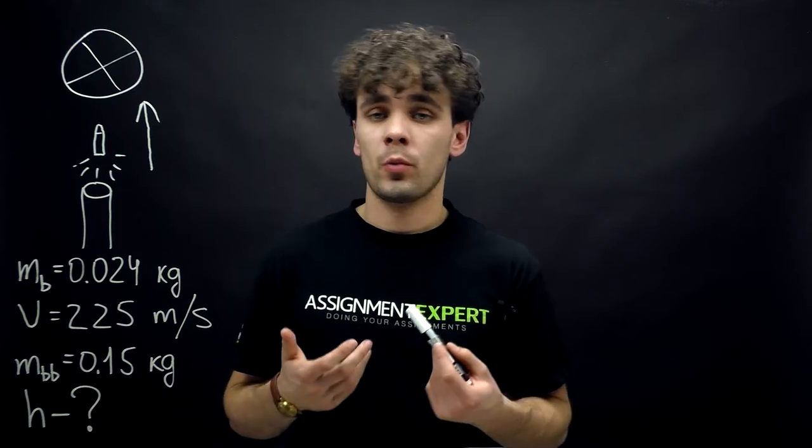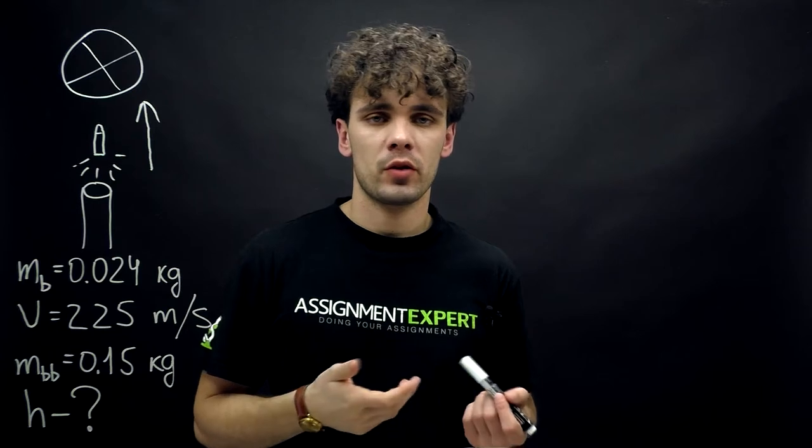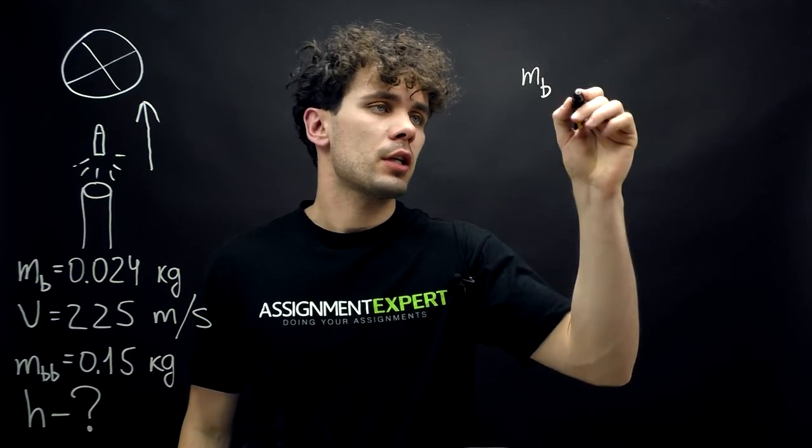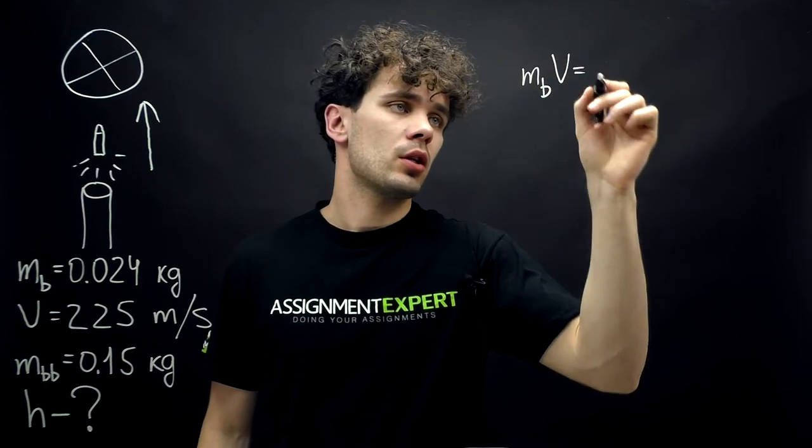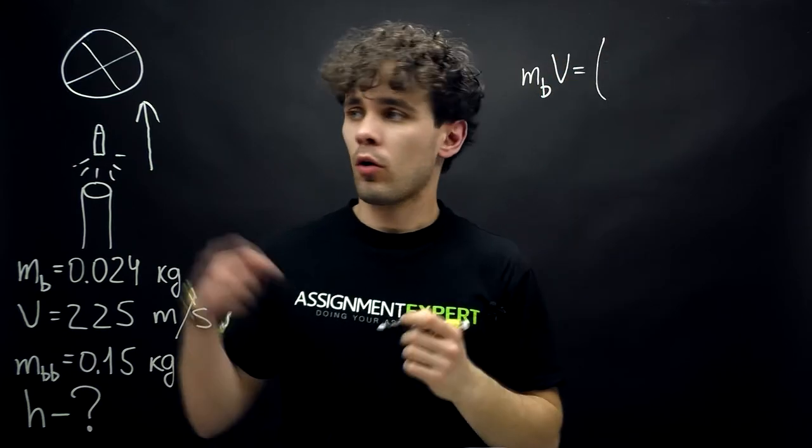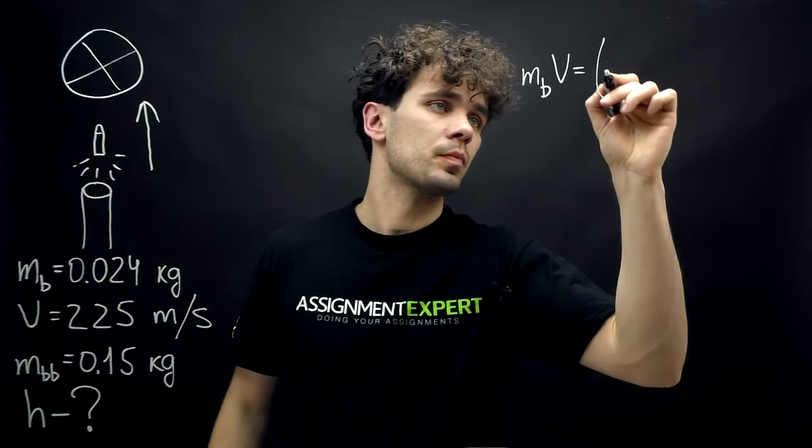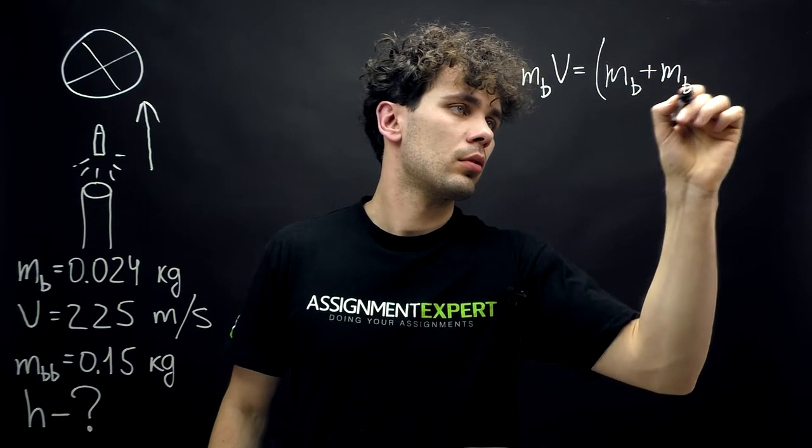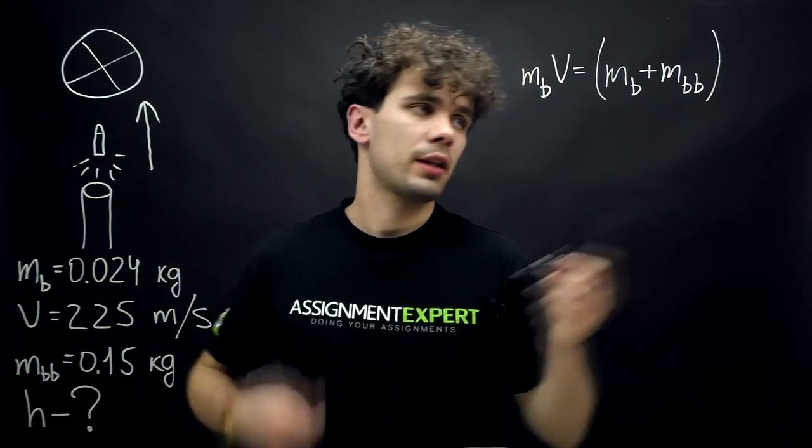Alright, so when the bullet hits the ball, there is a conservation of momentum. The mass of the bullet times the initial speed is equal to the sum of the masses of the ball with the bullet times the speed after the collision.